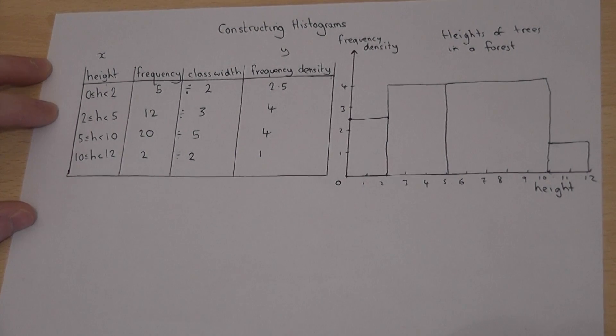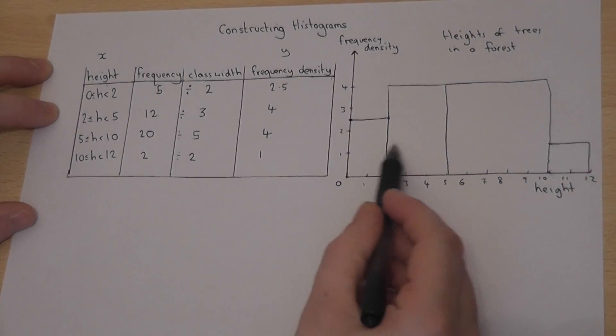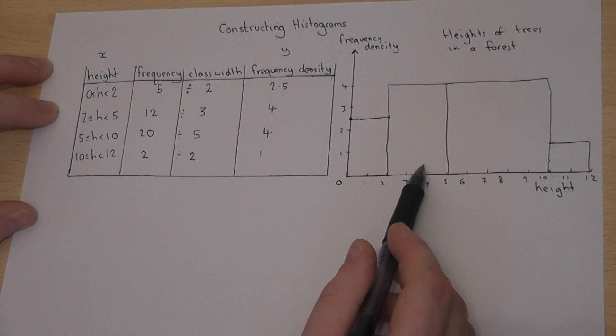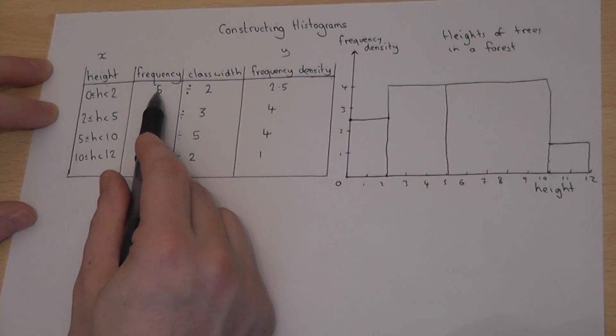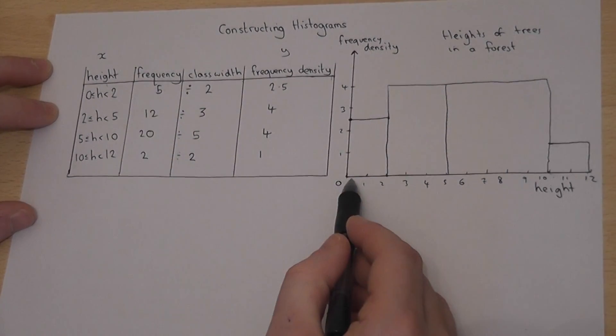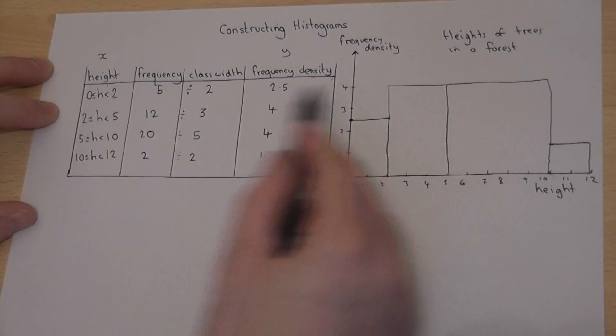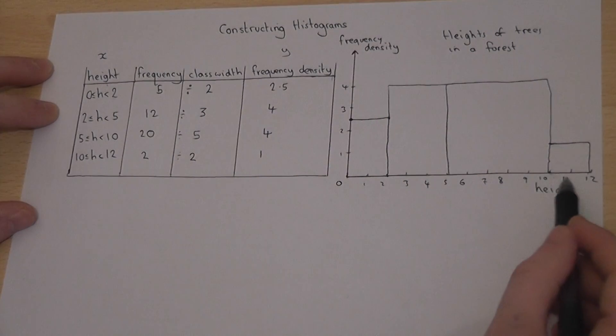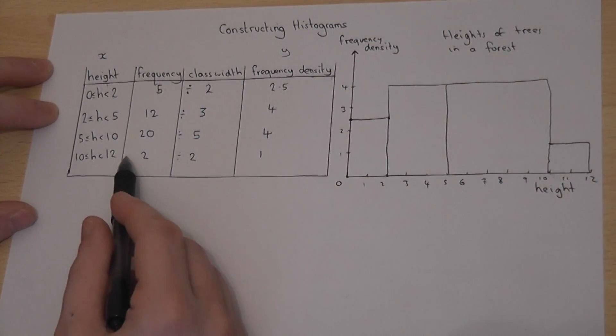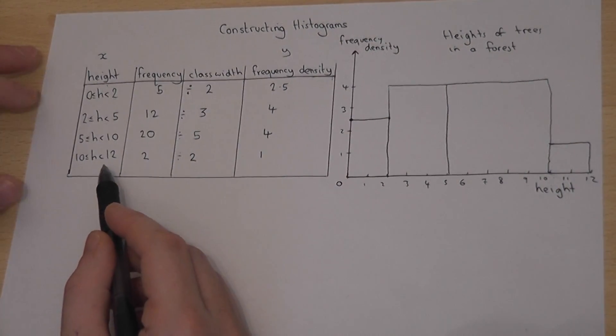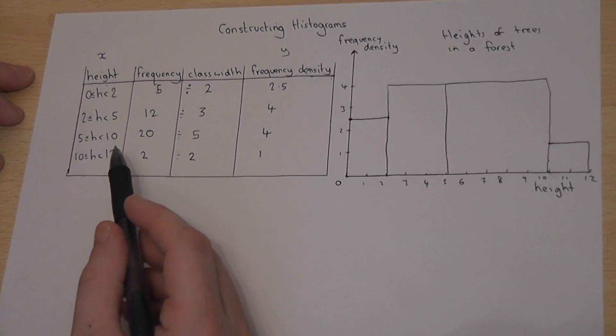And the key point about this is that the area of each of the bars represents the frequency. So 2 times 2.5 is 5, 3 times 4 is 12, 5 times 4 is 20, and 2 times 1 is 2. The area of the bars equals the frequency.